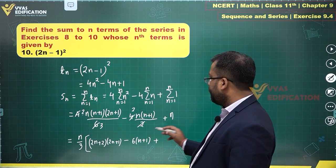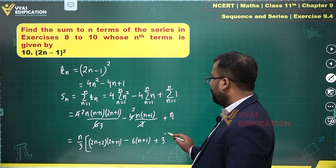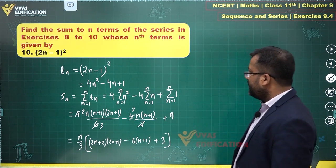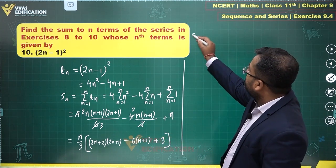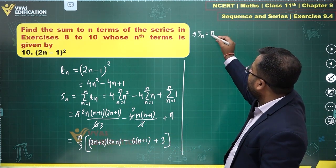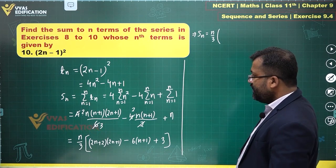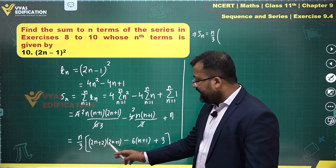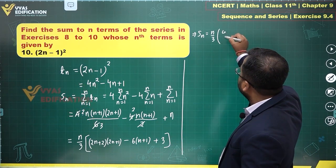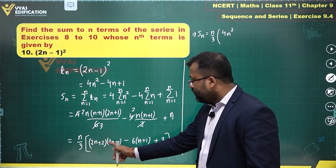Plus 3, since n/3 has gone out this becomes 3. So Sn will be n/3, and in the bracket we get 4n² (there's no other n² term), then 2n, 4n which is 6n.